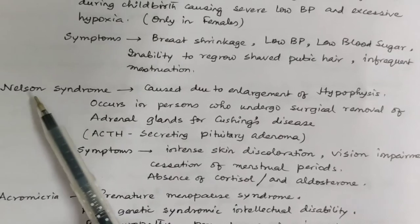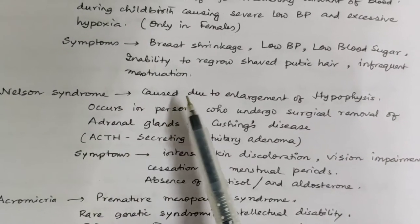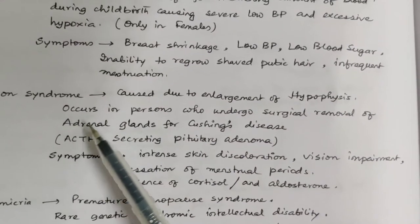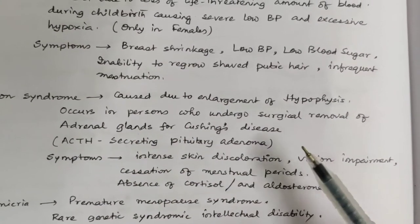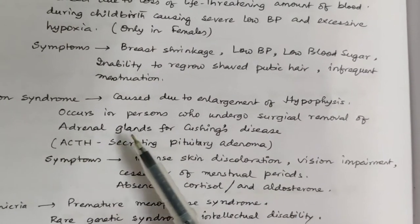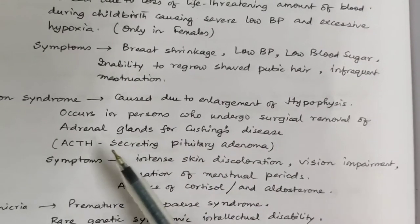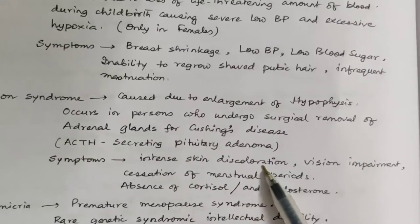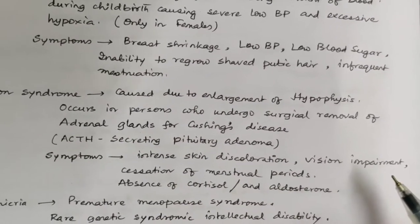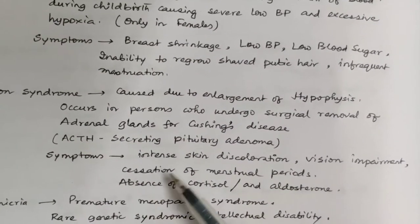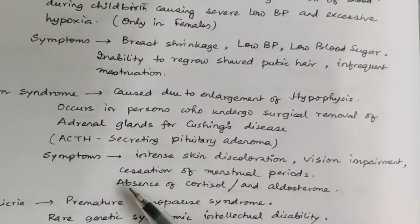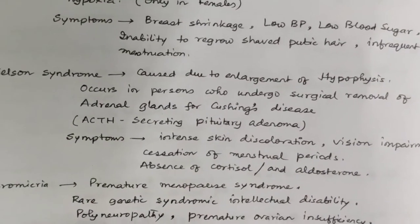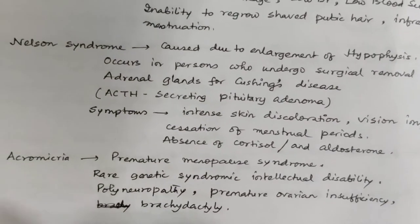What is Nelson's syndrome? It is a syndrome caused by enlargement of the hypophysis, occurring in persons who undergo surgical removal of the adrenal glands for Cushing's disease. Symptoms are intense skin discoloration, vision impairment, cessation of menstrual periods, and absence of cortisol and aldosterone.